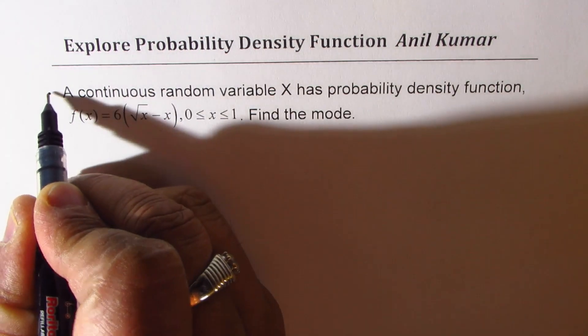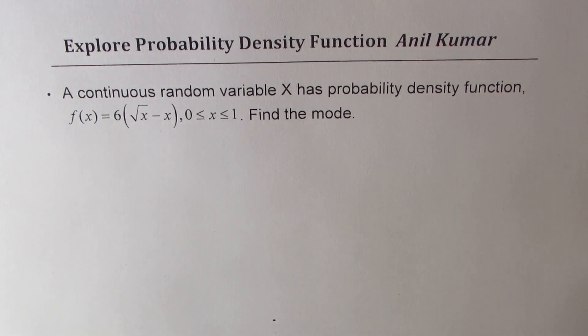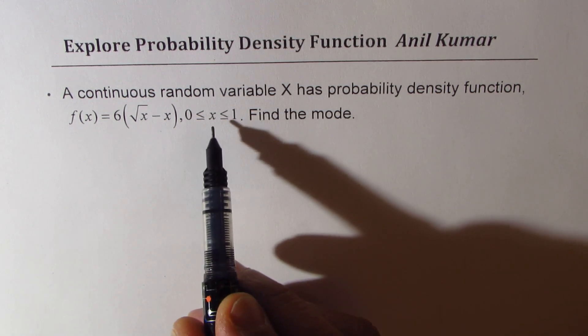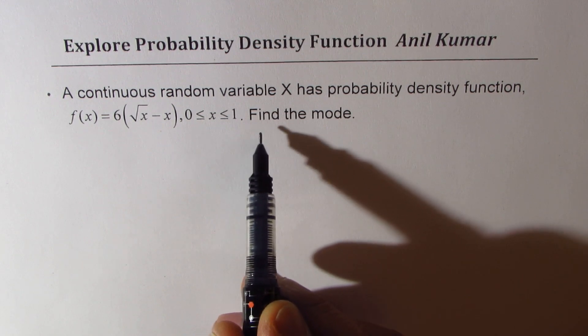The question here is, a continuous random variable x has probability density function f(x) equals 6 times square root of x minus x, where x is between 0 to 1. Find the mode.